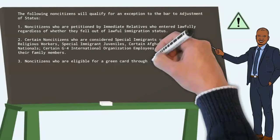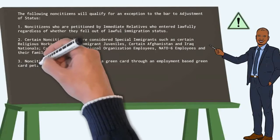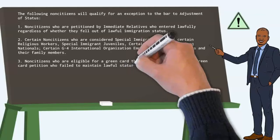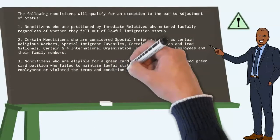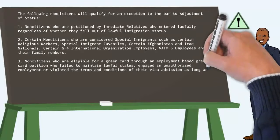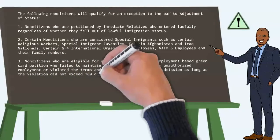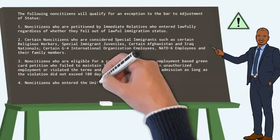Three: Non-citizens who are eligible for a green card through an employment-based green card petition who failed to maintain lawful status, engaged in unauthorized employment, or violated the terms and conditions of their visa admission as long as the violation did not exceed 180 days.